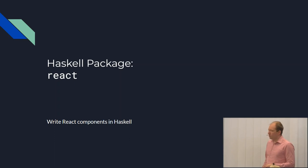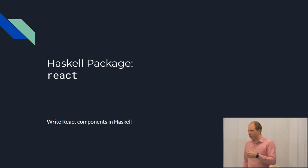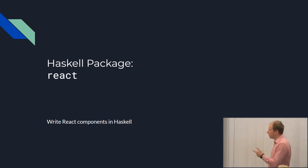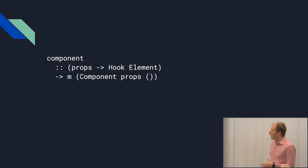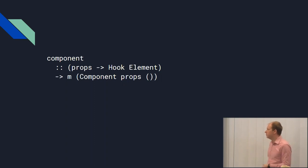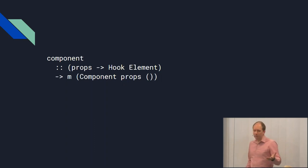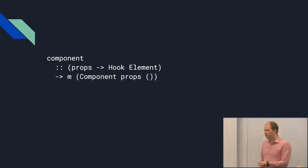In order to enable direct interoperability between JavaScript and Haskell, my company wrote a package called React, which we're releasing today, allowing you to do exactly the same thing in Haskell. In React, a component is just a function. Using our library, you pass that function to this component function, which gives it better types. Basically, you give us a function that takes some props, it can run hooks, and eventually it returns some elements.